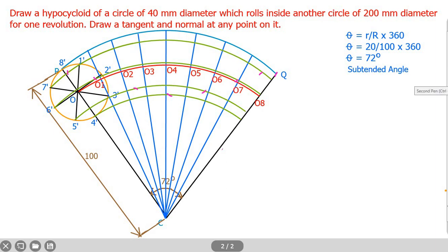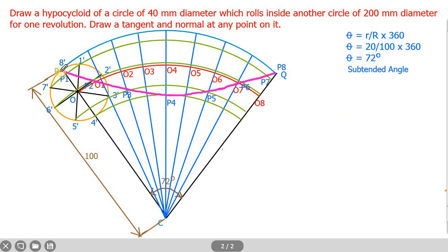Then, take an HB pencil and smoothly join P to P1, P1 to P2, P2 to P3, and continue joining all the points in sequence up to P8 to form the hypocycloid curve. Use the HB pencil to draw this smooth hypocycloidal curve.